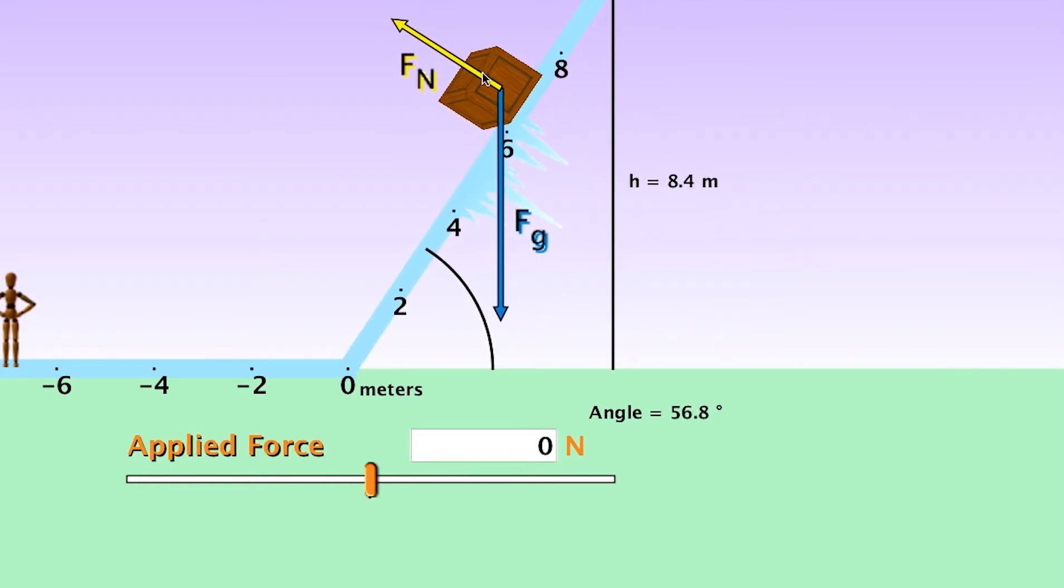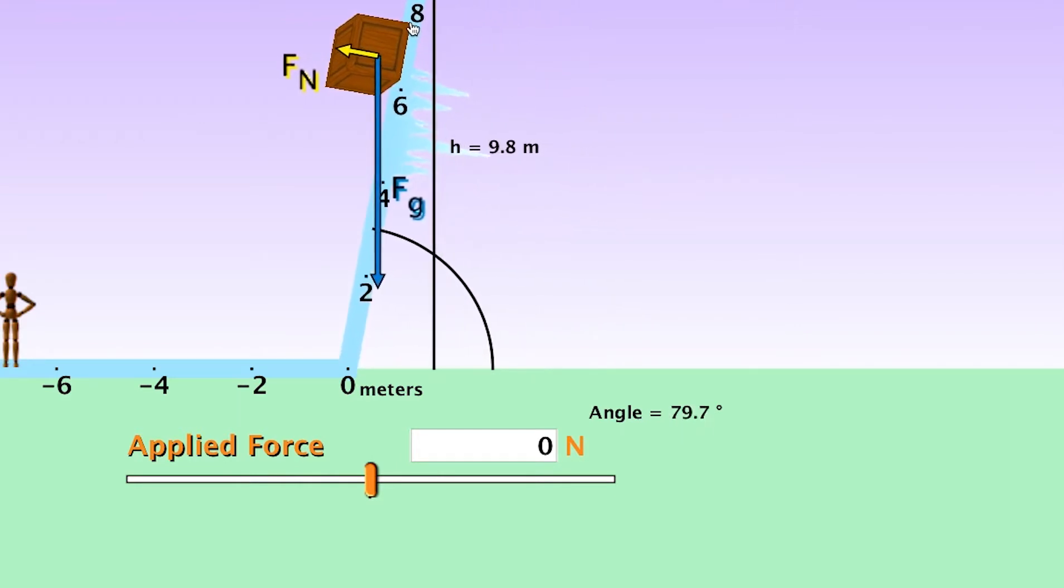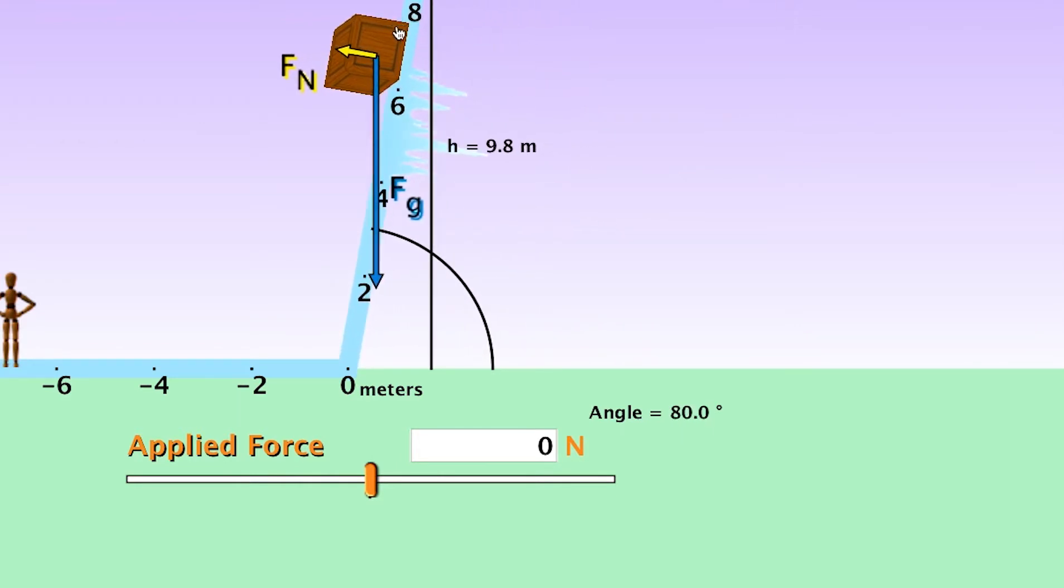So this force here clearly is now not only in a different direction but at a smaller value. If I really almost increase it to vertical you can appreciate that the cosine will eventually become cosine 90 which is equal to zero therefore there is no normal force acting.